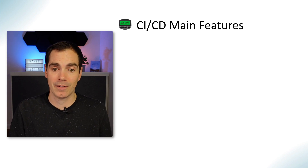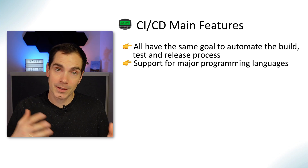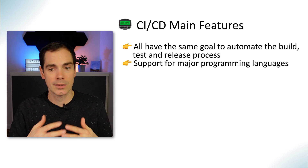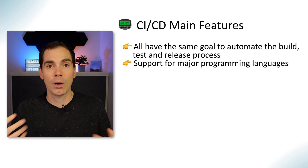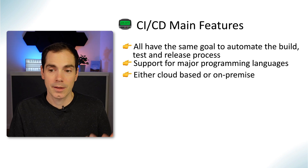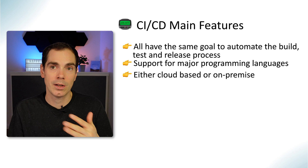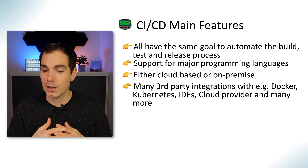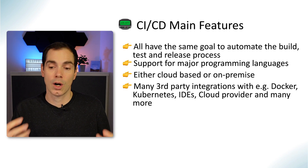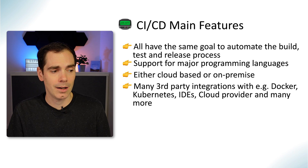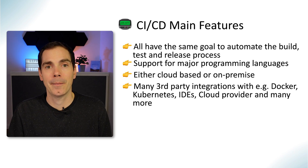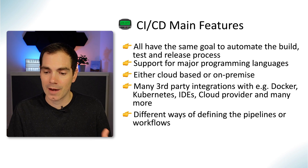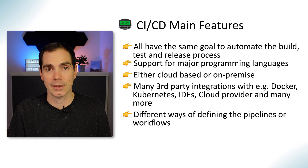So what are the main features of a CI/CD system? All CI/CD systems have the same goal: to automate the build, test, and release process. They support basically all the major programming languages on the market. CI/CD systems are either cloud-based or on-premise — you can install it on your own servers or use a hosted version in the cloud. Many systems integrate with third-party services such as Docker, Kubernetes, IDEs, cloud providers, and many more. They also have different ways of defining pipelines and workflows.